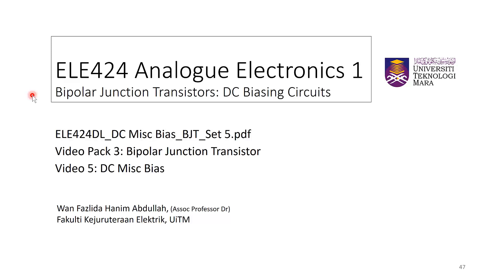Welcome back to ELE 424 Analog Electronics 1. We are still under the topic of DC biasing circuits. We have covered fixed bias, emitter stabilized bias, and voltage divider biasing circuit. Today we are going to wrap up the last portion of DC biasing circuits — this is the fifth video under video pack 3, Bipolar Junction Transistors. This video covers miscellaneous bias configurations. I am Wan Fazlida Hanim Abdullah from the Faculty of Electrical Engineering, UITM Shah Alam.